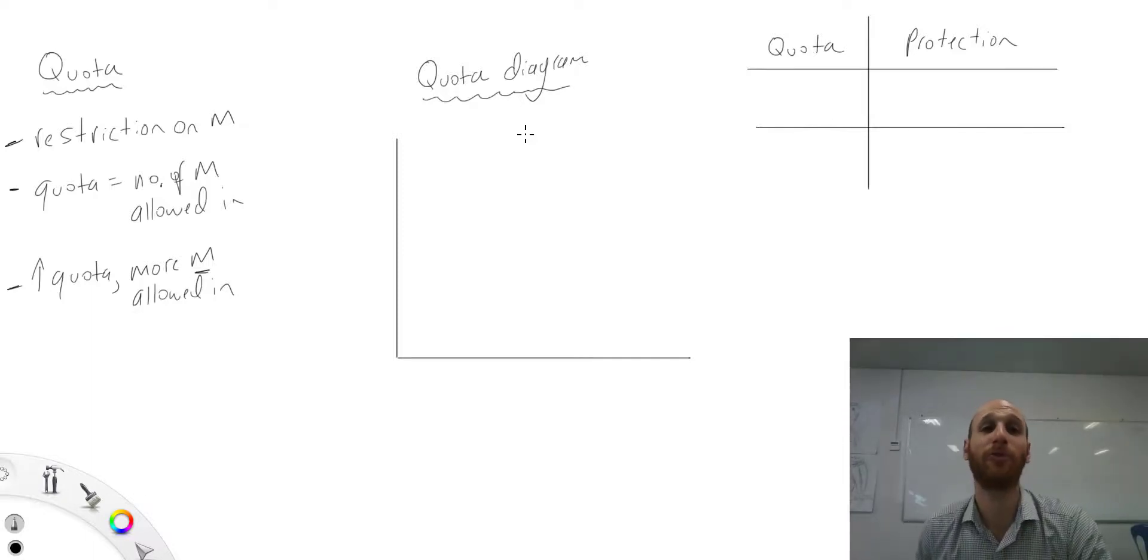In this video we're looking at the protection measure of a quota. We're going to look at the basics of what a quota is and how to draw it. A quota is a restriction on imports. So a quota simply means how many imports are allowed into a country.